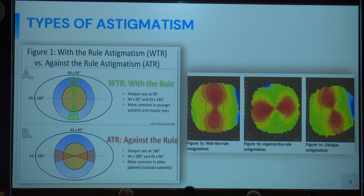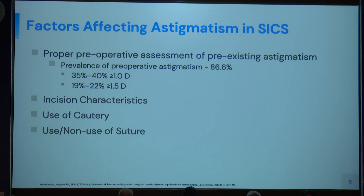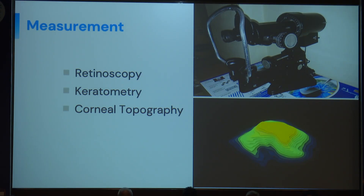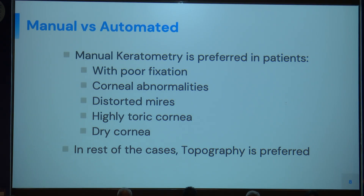There are two types of astigmatism — with-the-rule and against-the-rule. Against-the-rule is the one we usually deal with because most of our patients are older patients undergoing cataract surgeries. The main factors affecting astigmatism are incision characteristics, the use of cautery, and use or non-use of sutures. Pre-operative assessment of pre-existing astigmatism is essential. We measure astigmatism by retinoscopy, keratometry, or corneal topography. The mainstay these days is corneal topography, but in cases of poor fixation, corneal abnormalities, distorted pupils, or highly toric cornea, we still use a manual keratometer.